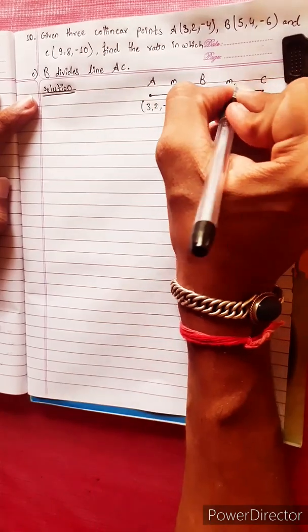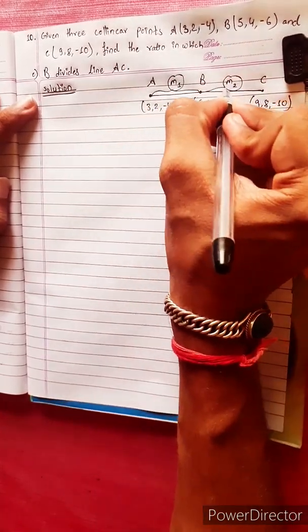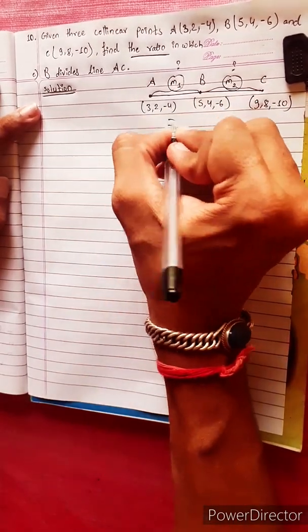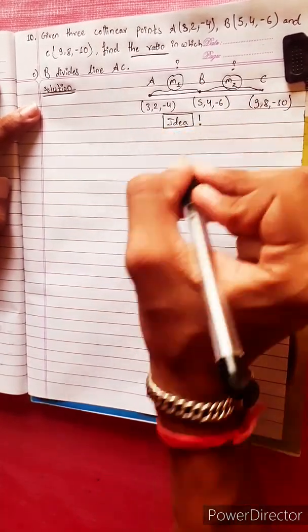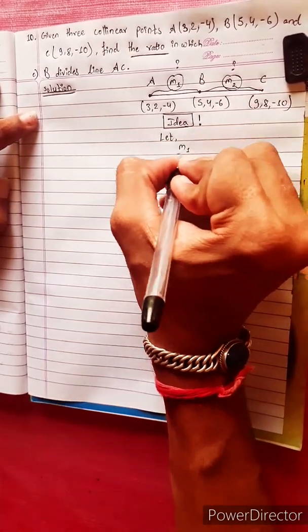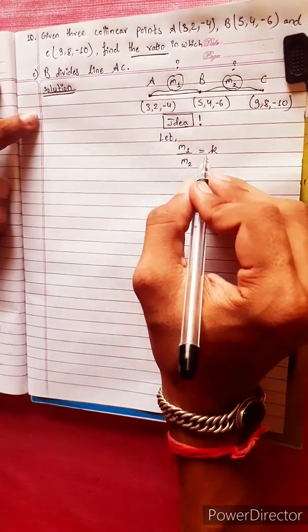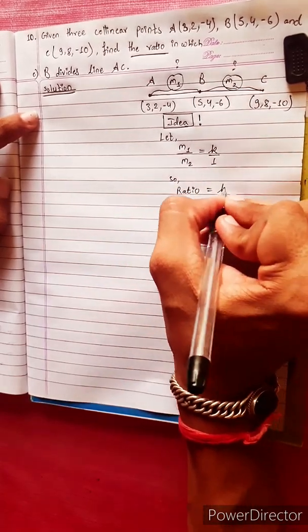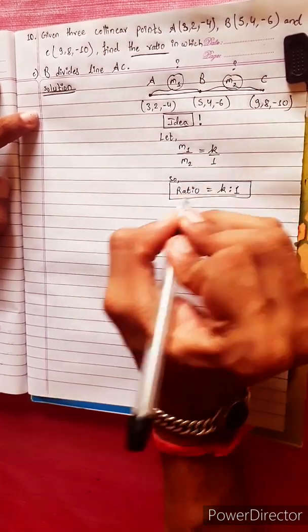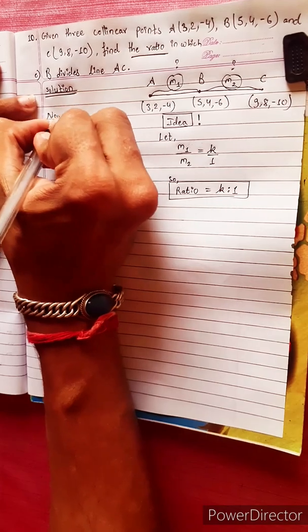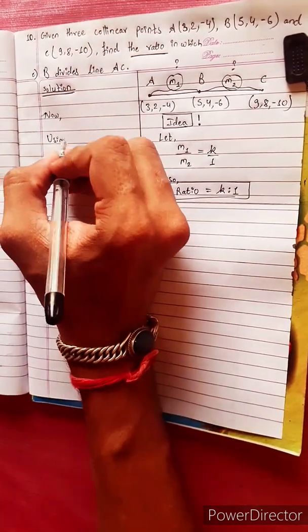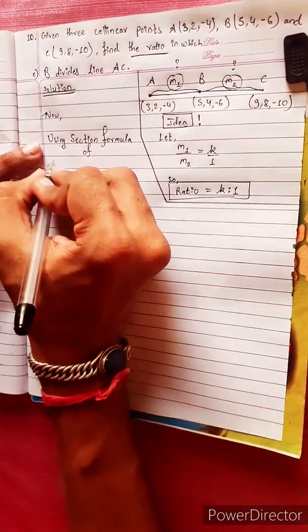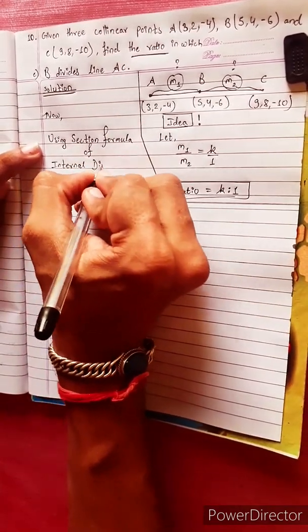Suppose M1 and M2. The ratio is given. M1 divided by M2 equals k, so the ratio equals k to 1. Using section formula — internal division.